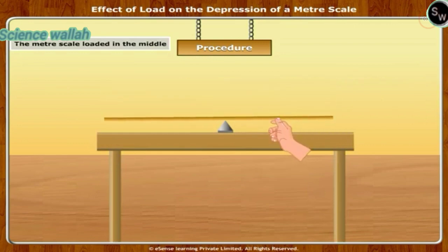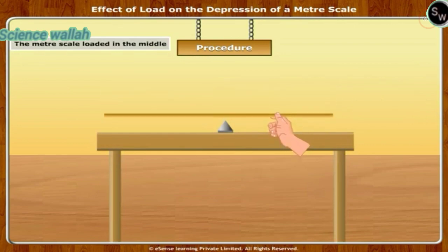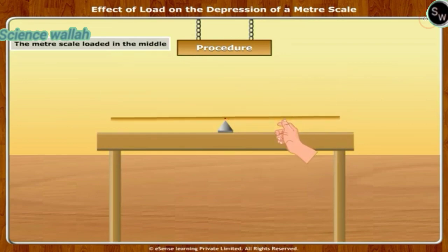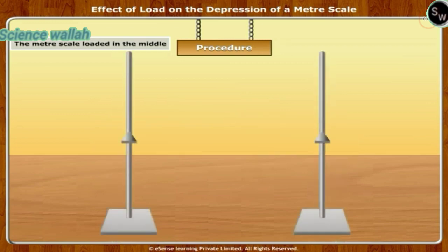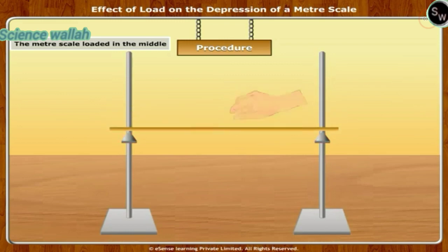Meter scale loaded in the middle. Locate the center of gravity of the meter scale. Place the scale on two knife edges about 80 centimeters apart such that the knife edges are equidistant from the center of gravity of the meter scale.